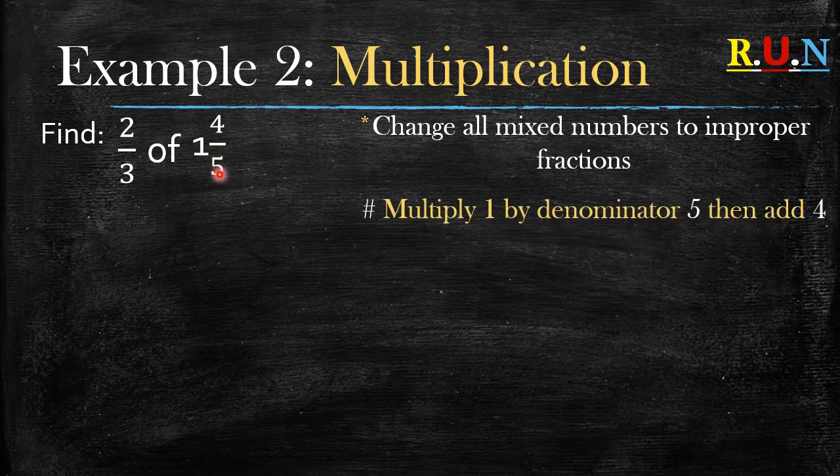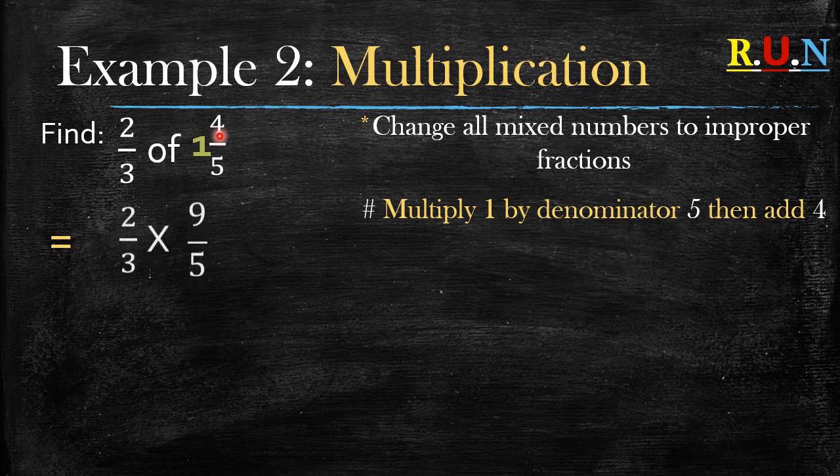How do we change it to an improper fraction? By multiplying the highlighted one by denominator five then we add four. So we say one times five plus four gives you what? Gives you nine.